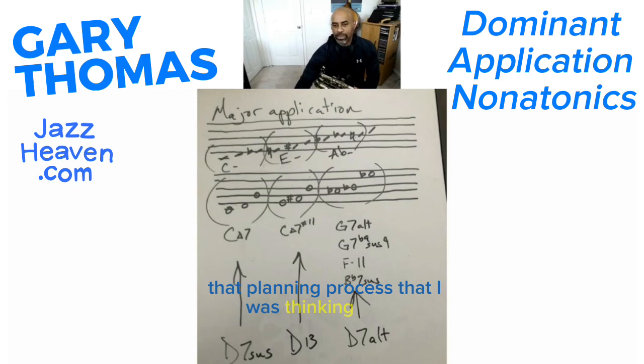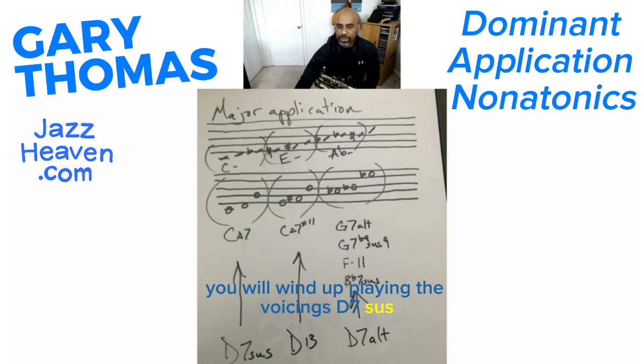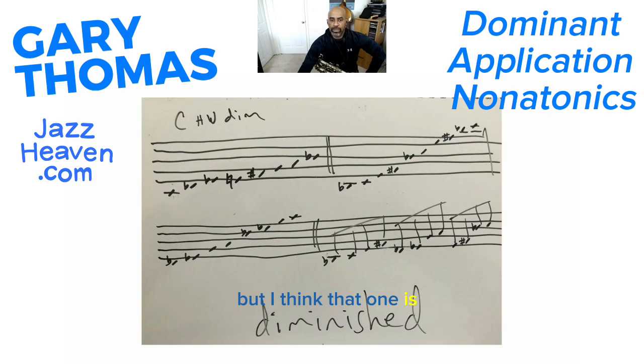If you have A minor to D7, you'll wind up playing the voicings D7 sus, moving to D13, and moving to D7 alt with those three note groups — or something based on that non-diatonic scale, because that might be the one most unfamiliar to me.